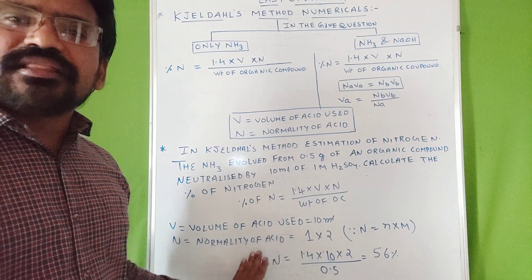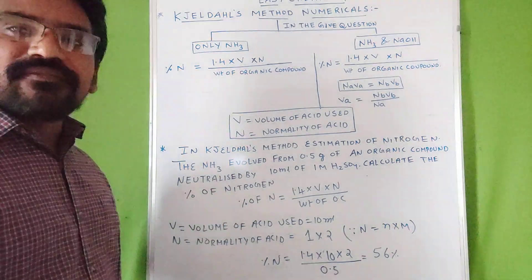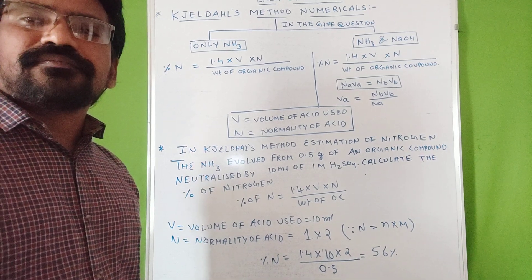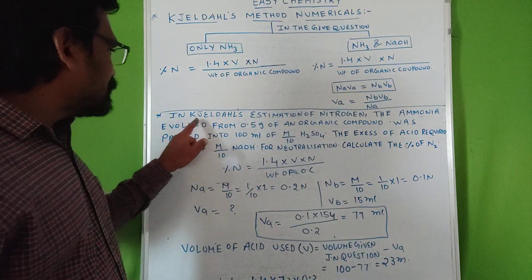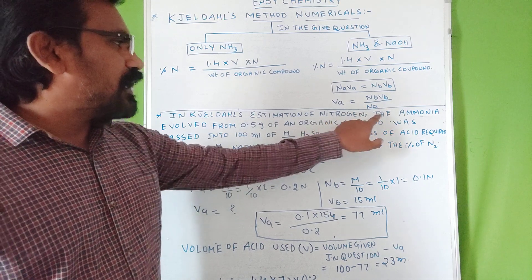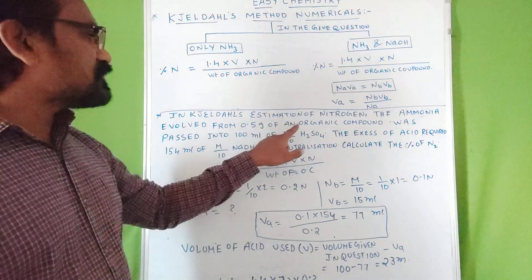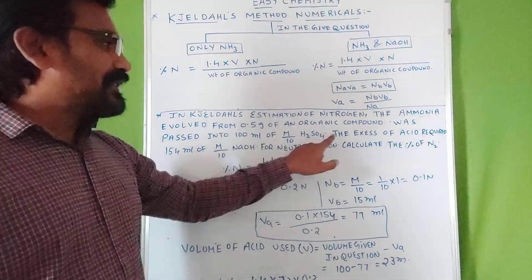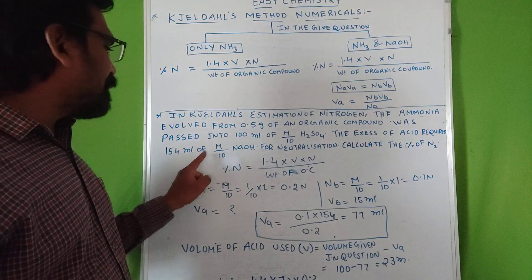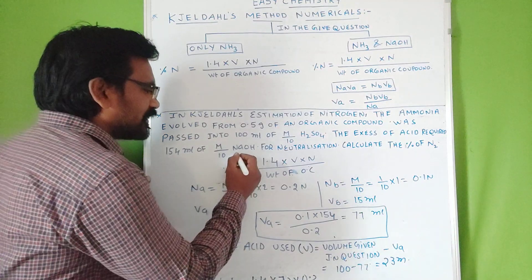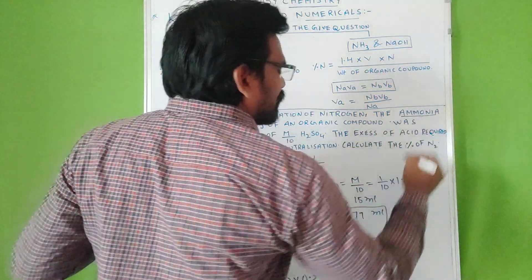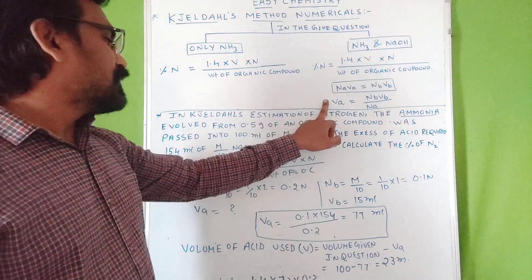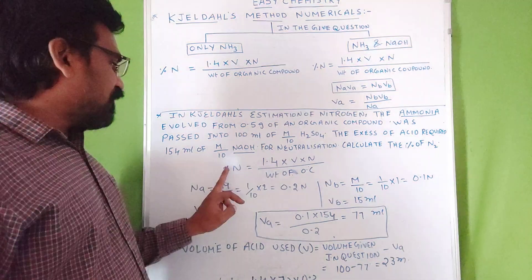That is the simple way to calculate Jeldahl's method when only NH3 is present. Now the next example contains NaOH. In Jeldahl's method estimation of nitrogen, the ammonia evolved from 0.5 grams of an organic compound was passed into 100 ml of M/10 H2SO4. The excess acid required 154 ml of M/10 NaOH. Here NaOH is present along with ammonia, so it is a back titration.